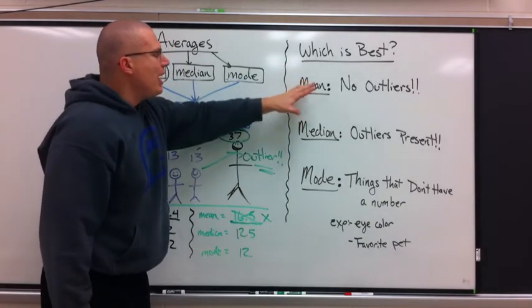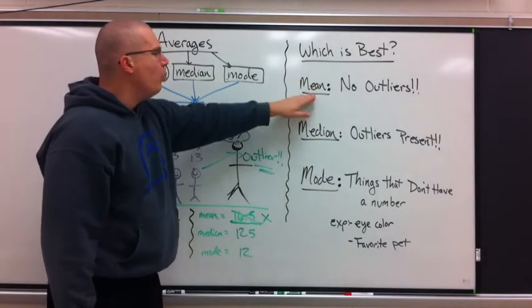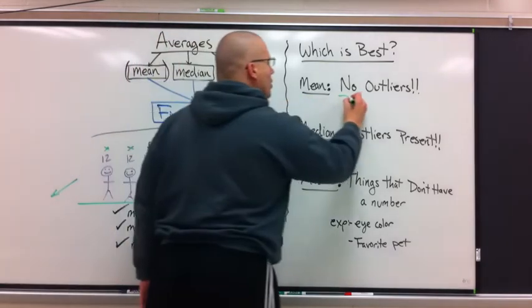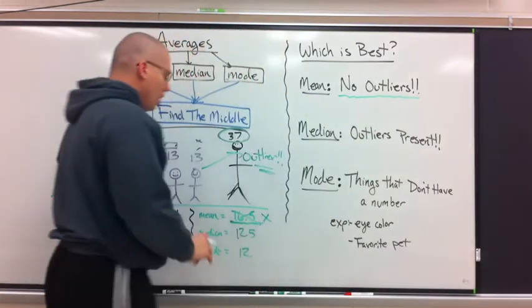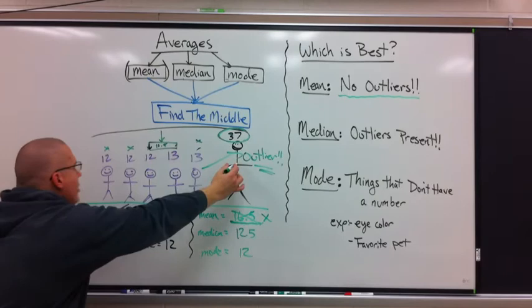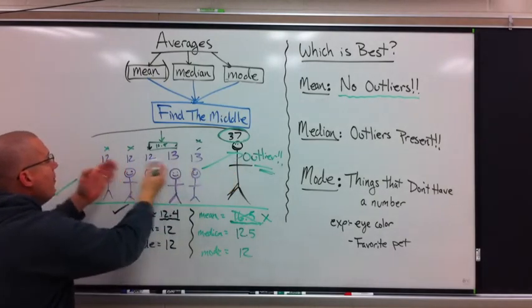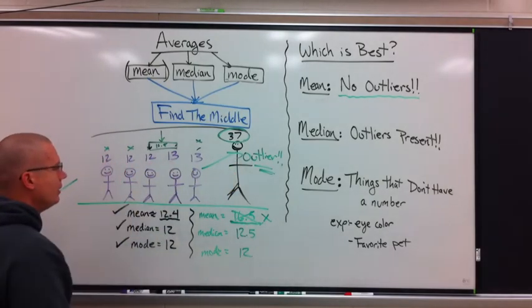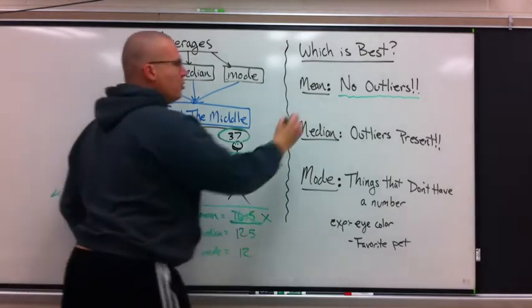So, it's not how to find it, it's when you use them. When should I use the mean? When there are no outliers, no big or very small numbers. All of the numbers are very close together. That is the rule.